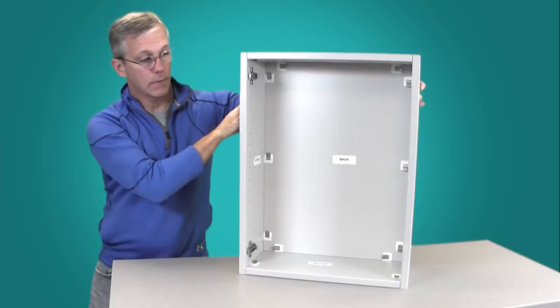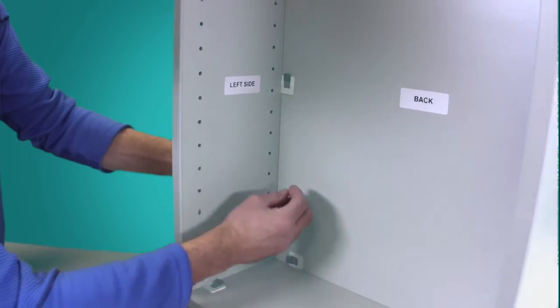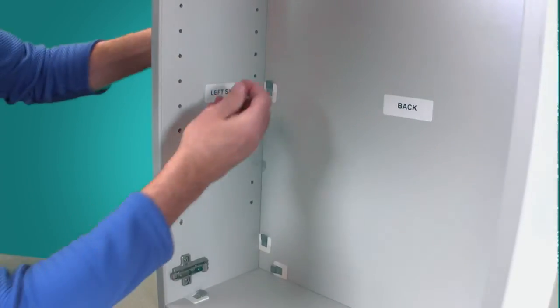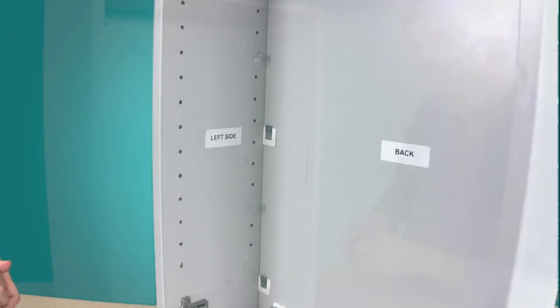Stand your unit to the upright position. Decide the positioning of the shelves. Insert the clear plastic shelf pins in the back holes of your desired height.